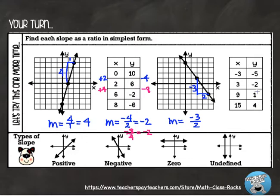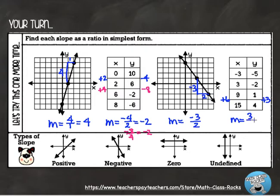Last one — I'm going to find my change in y over my change in x. I'm not going to use the top rows with negatives; I'll use the bottom ones since all positive numbers make this easier. My change in y from one to four is plus three, and my change in x from nine to fifteen is plus six. Keeping y up high: three over six reduces to one-half. So the slope is one-half.